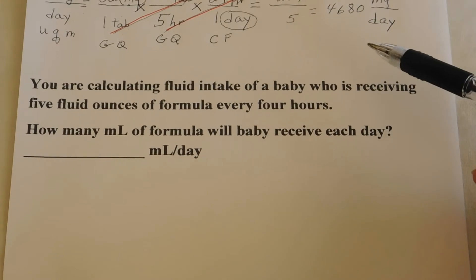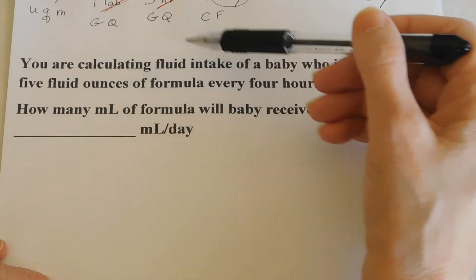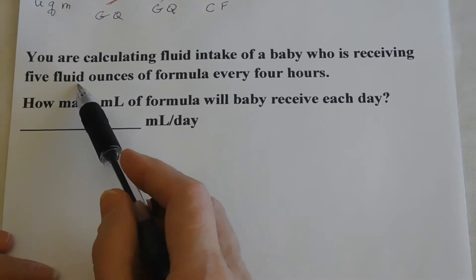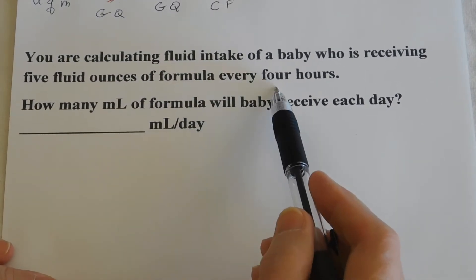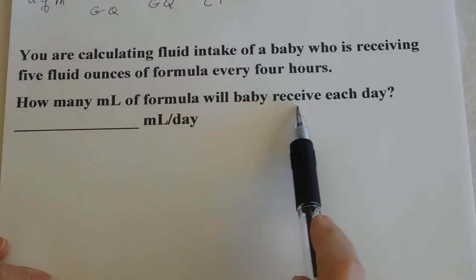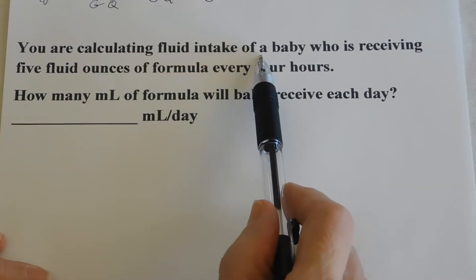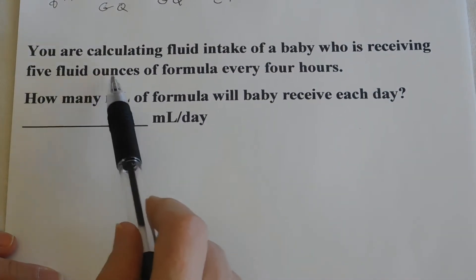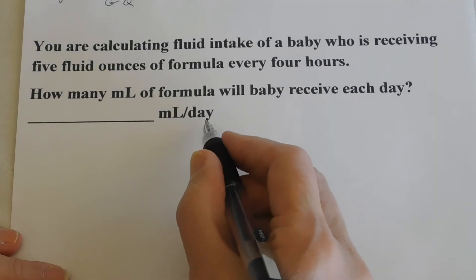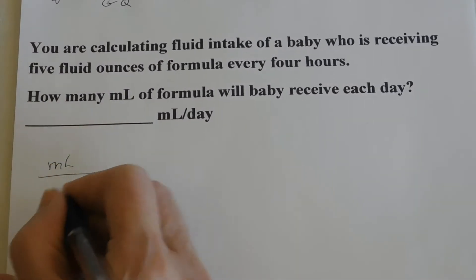Our next dimensional analysis problem: we're looking at a little baby. We are calculating the fluid intake of a baby who is receiving 5 fluid ounces of formula every 4 hours. The question is asking how many milliliters of formula will this baby receive each day? We've got fluid ounces here, and the question is asking for milliliters. So we start our dimensional analysis by putting in our units of measure: milliliters per day.